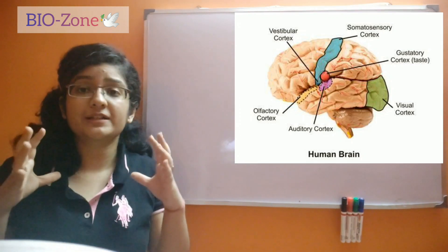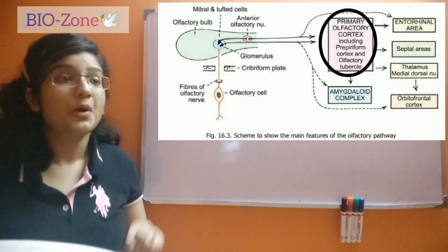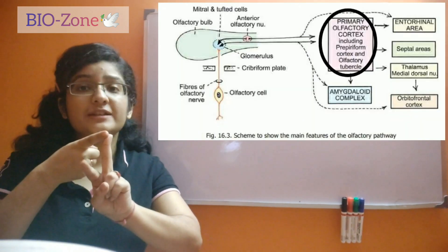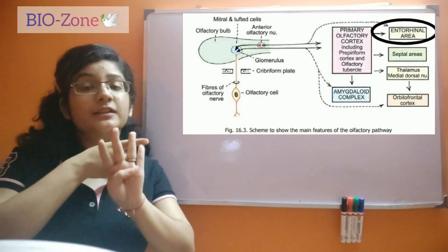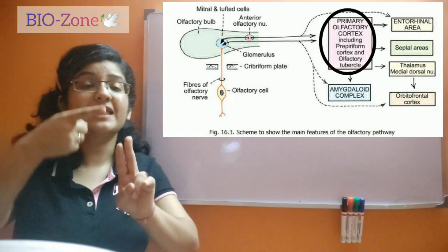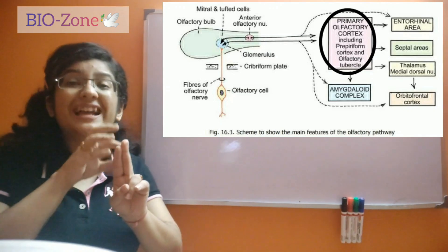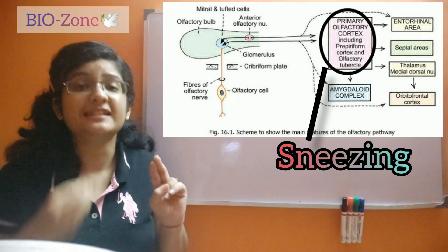Now the olfactory cortex has several portions. What are those portions? One is the olfactory tubercle, piriform cortex, amygdala, and the entorhinal cortex. These two, olfactory tubercle and the piriform cortex, conjointly form the primary olfactory cortex region, which helps in sniffing.